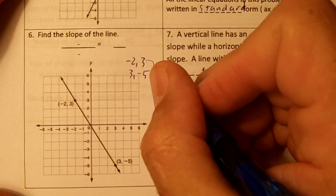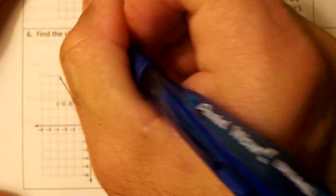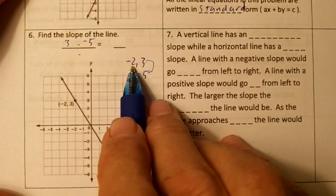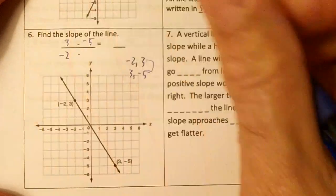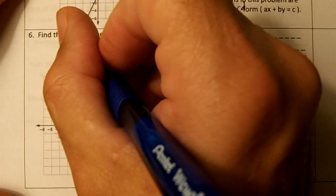We're going to put the y's on top so we'll put three and negative five on top and we'll put our x's corresponding on bottom. The three and the negative two need to be paired together and the three needs to be paired with the negative five.